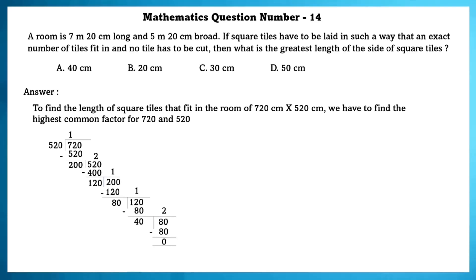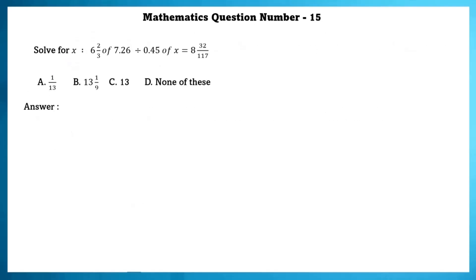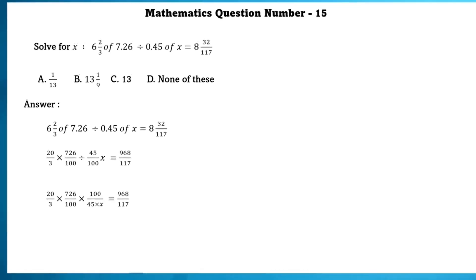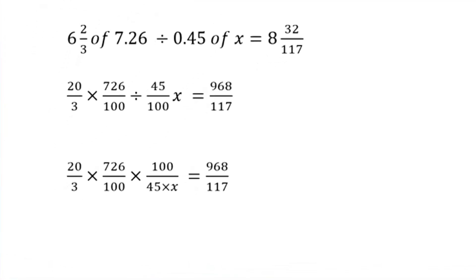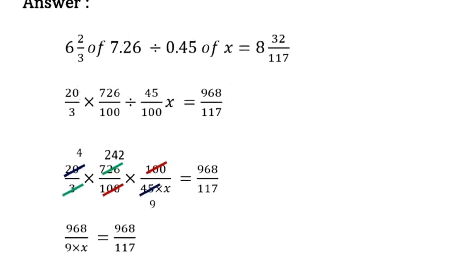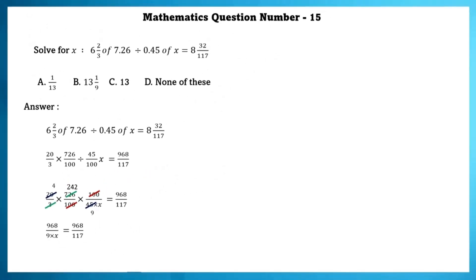Mathematics question number 15. Solve for X. First, convert everything into improper fractions, then convert division into multiplication by reciprocating. We get 968/9 × X = 968/117, and solving, the value of X = 13.